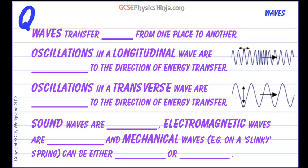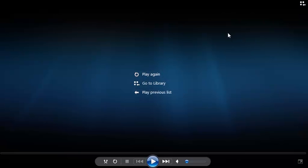Waves are oscillations either through a medium or a material, or even through a vacuum, as in the case of electromagnetic light waves for example. The common theme of all waves is that they transfer energy from one place to another. Let's take a look at the two main types of waves, the two families of waves.